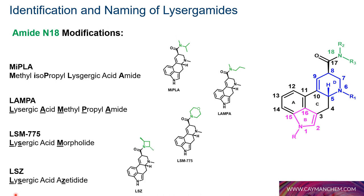LSZ — L and S from lysergic, Z from azetidide. The letter Z is used instead of A to avoid confusion with LSA. Because azetidide is also a cyclic substituent, the tryptamine naming convention does not apply. Note that these are not the only N18 modifications you will encounter.